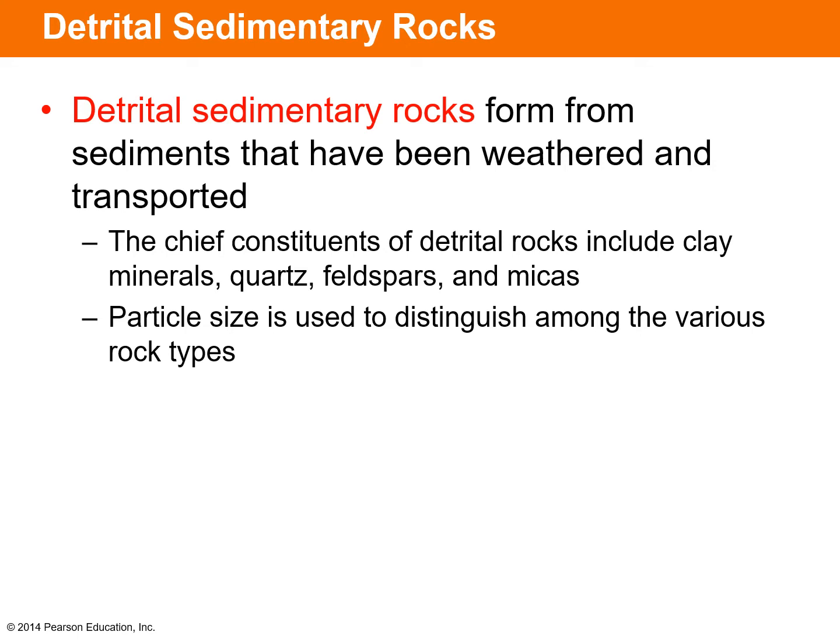Detrital sedimentary rocks form from sediments that have been weathered and transported. The chief constituents of detrital rocks include clay minerals, quartz, feldspars, and micas, and particle size is used to distinguish among the various rock types. You can think of these rocks as pieces of other rocks that were physically or chemically weathered, then deposited, buried, and lithified into detrital sedimentary rocks.